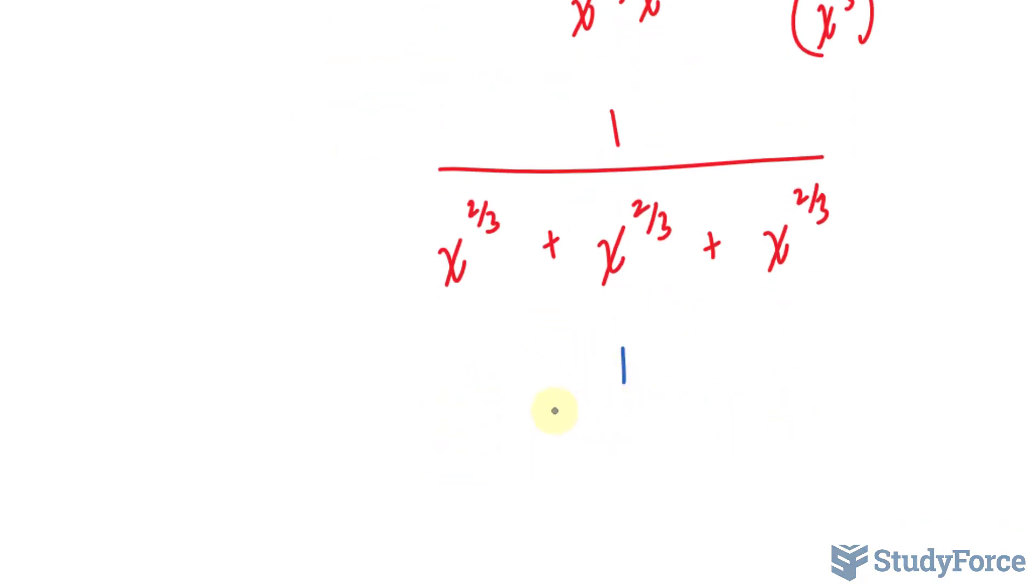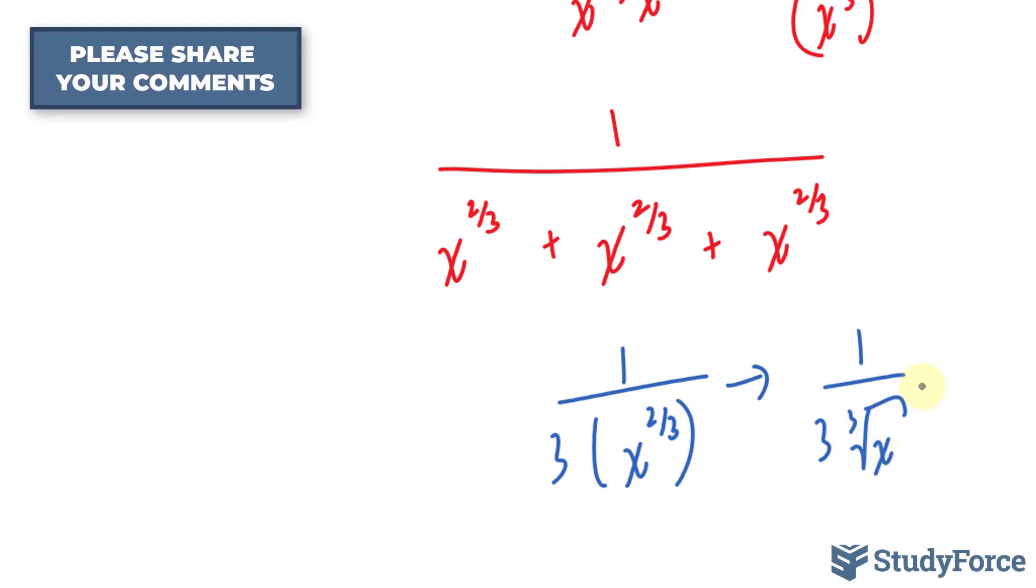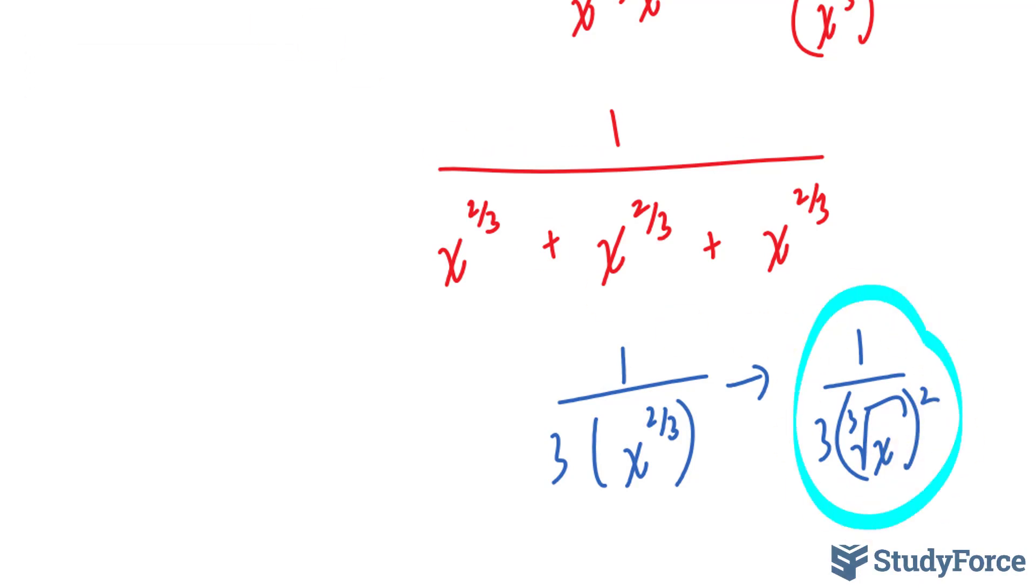We can rewrite this as 1 over 3 x to the power of 2 over 3. And if you want this as a radical, you write this down as 1 over 3 times the cube root of x to the power of, and you can place that 2 over here or on the outside. This expression is the derivative of what we started with.